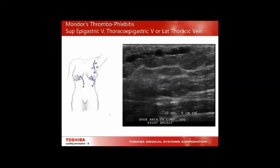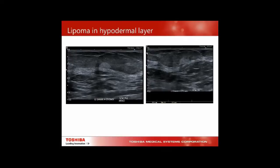Mondor's thrombophlebitis is a rare, self-limiting condition. The important thing is diagnosing what it is — it appears in the hypodermal layer, within the veins of the breast. Like any thrombophlebitis, follow it until you get to a patent vein to prove it's a venous thrombus. Lipomas in the hypodermal layer appear echogenic in breasts (unlike other regions where they are hypoechoic) because of the acoustic impedance mismatch between the surrounding hypodermal fat and the lipoma.